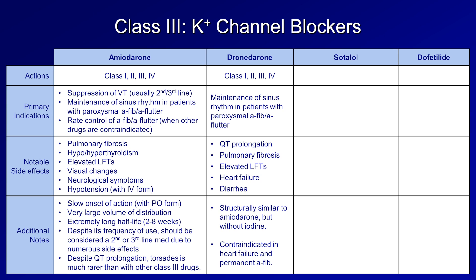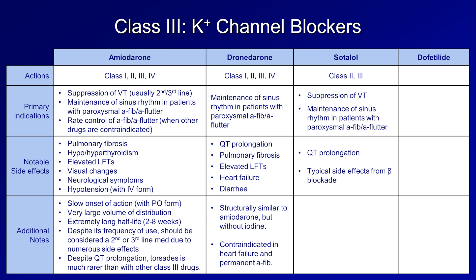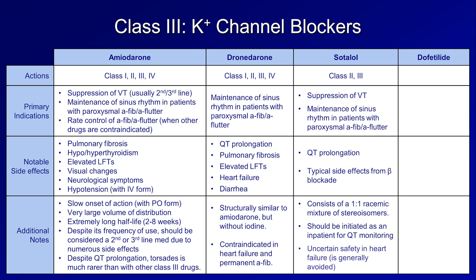The next drug is sotalol. As you might guess based on the suffix, sotalol is not just a potassium channel blocker, but is also a beta blocker. Its primary indications are suppression of VT and maintenance of sinus rhythm in patients with paroxysmal AFib and AFlutter. Its notable side effects include significant QT prolongation, as well as all of the typical side effects from beta blockade. Sotalol consists of a one-to-one racemic mixture of stereoisomers, both of which have potassium channel blocking properties, but only one of which has beta blocking properties. Sotalol should always be initiated as an inpatient for QT monitoring, and it's usually avoided in heart failure due to uncertainty about its safety in that situation.